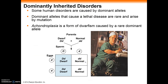We can also have dominantly inherited conditions. Here is a particular form of dwarfism that is inherited in a dominant manner. So we can have both recessive disorders and dominant disorders as well. I say 'disorder' because these individuals do suffer from particular conditions and tend to have a shortened lifespan.